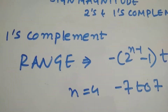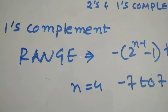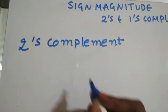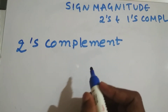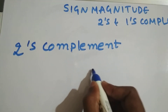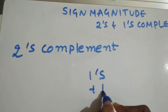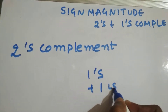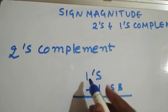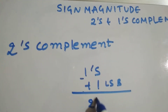Now let's go to two's complement form. Two's complement is one's complement plus 1 at the LSB. So if we take the one's complement and add 1 at the LSB, we get the two's complement.